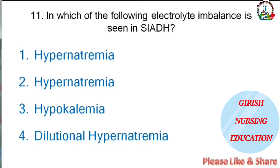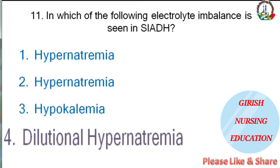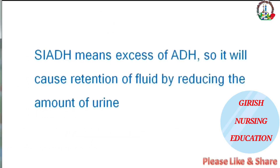Which electrolyte imbalance is seen in SIADH — hypernatremia, hypokalemia, or dilutional hyponatremia? The correct answer is dilutional hyponatremia. SIADH means syndrome of inappropriate antidiuretic hormone — excess of ADH causes retention of fluid by reducing the amount of urine.